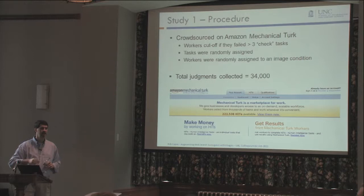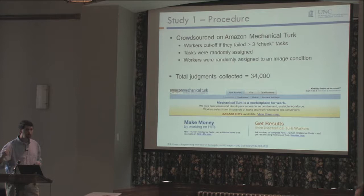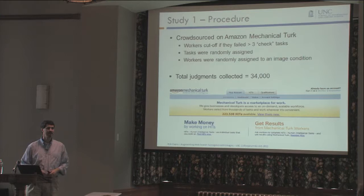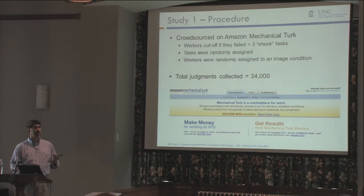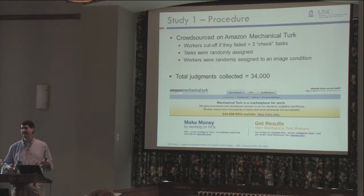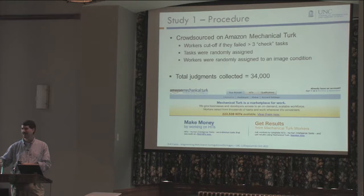Someone brought up Turkopticon — the site that rates requesters on Mechanical Turk, so workers can check if a requester treats people well. We actually ended up with a really high rating on Turkopticon, and our tasks tended to get done very quickly — some ran in a matter of hours. This study got 34,000 judgments done in batches of about 5,000 to 6,000. We throttled it a bit — you could only do up to 150 tasks and couldn't see a task twice — so this one took about a week.